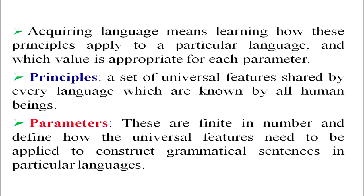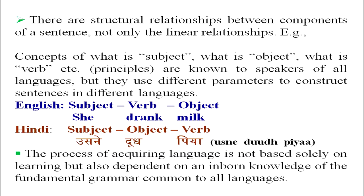Principles make us one — all human beings share certain principles of acquiring language — but parameters differ from language to language, making languages different. There are structural relationships between components of a sentence, not just linear arrangements. In every language we have concepts like subject, object, verb, direct object, indirect object, preposition, and so on. These concepts exist in our brains as principles.